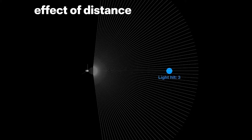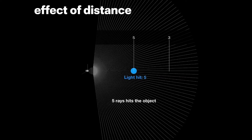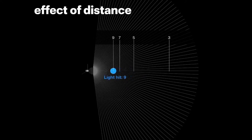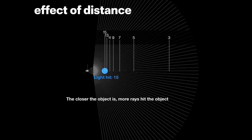What happens if we put the ball closer to the light source? We get five rays of light, then seven, nine, eleven, thirteen, fifteen rays. The closer the object is to the light source, the more rays hit the object. Notice that the distances between those lines — the three-ray line is really far from the five-ray line, but they get closer and closer. The difference between 13 and 15 rays is only two, but it's a tiny distance. Between three and five it's also only two rays, but a huge distance.